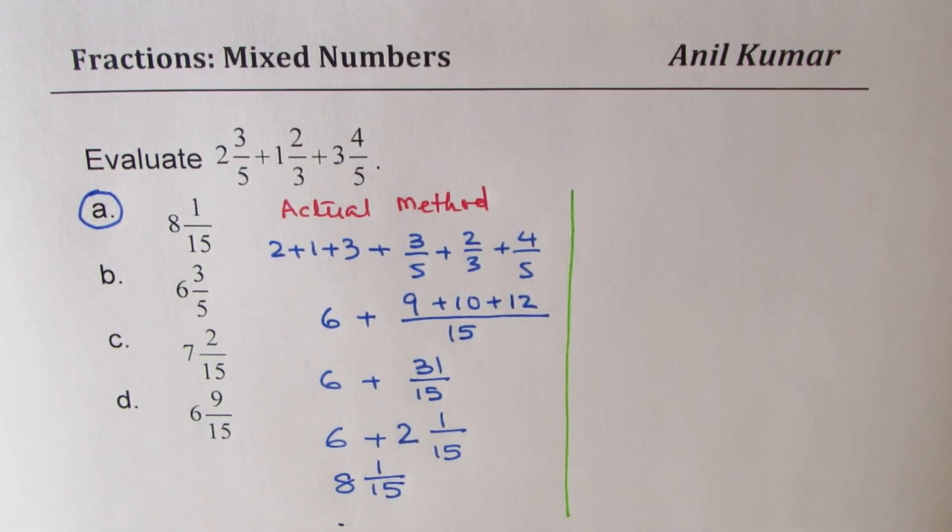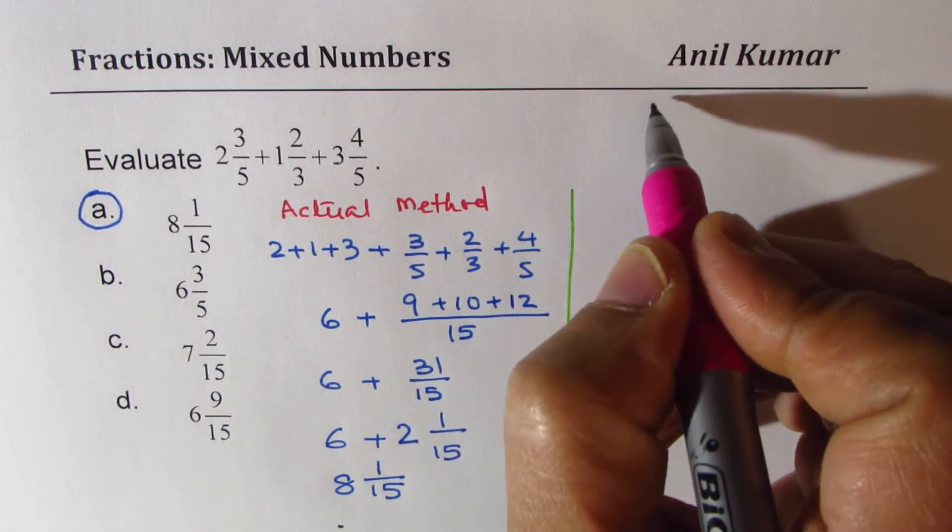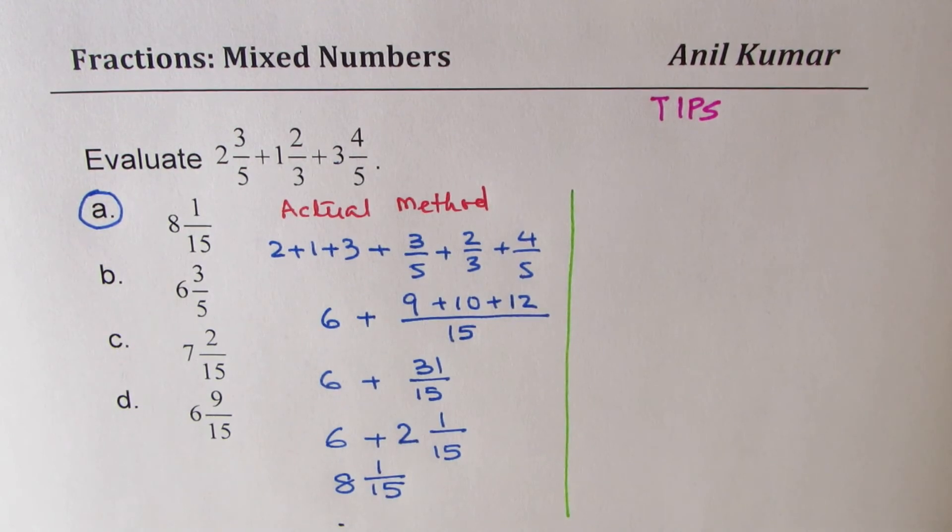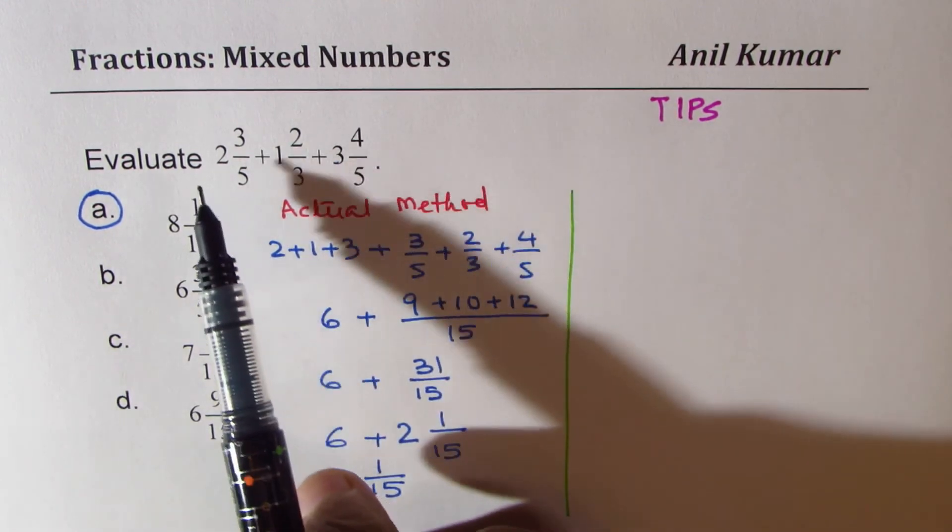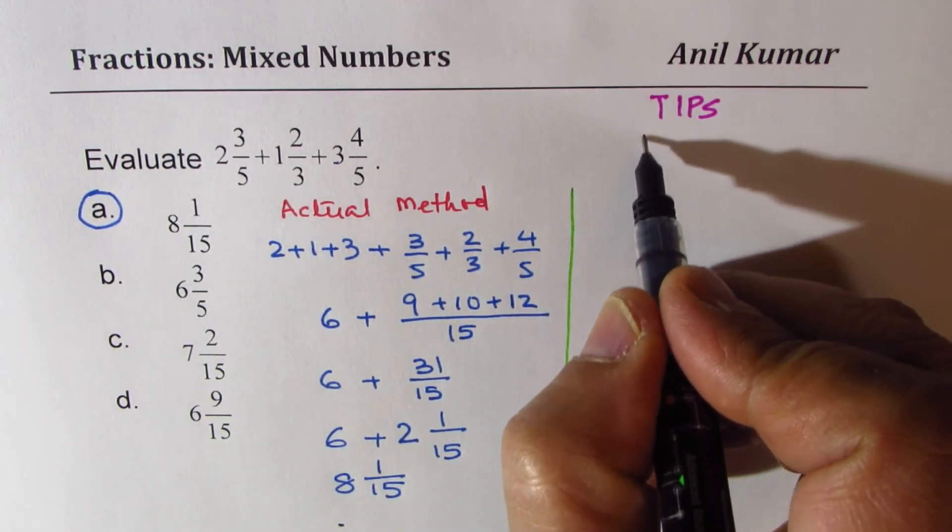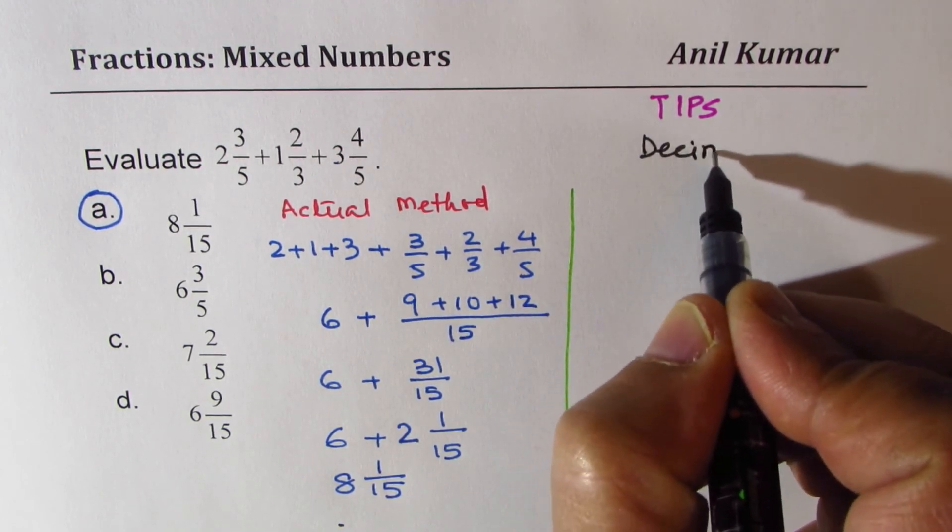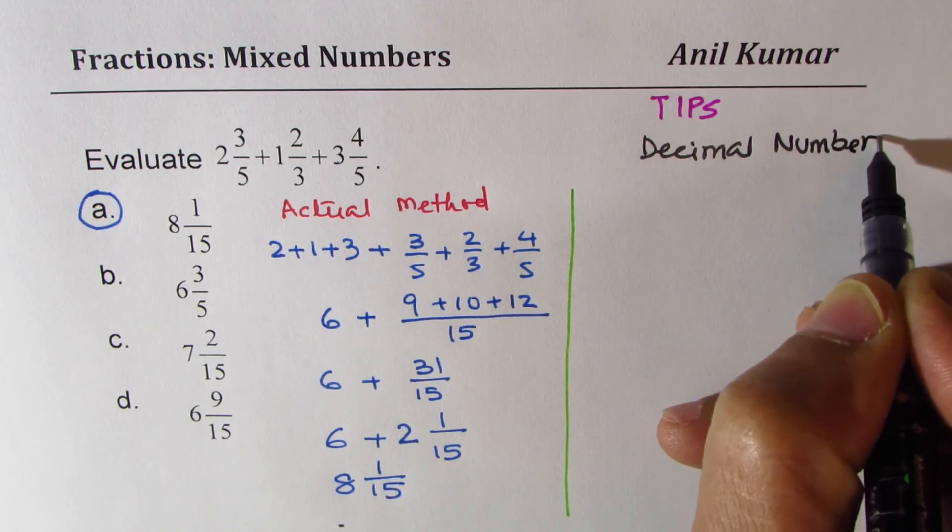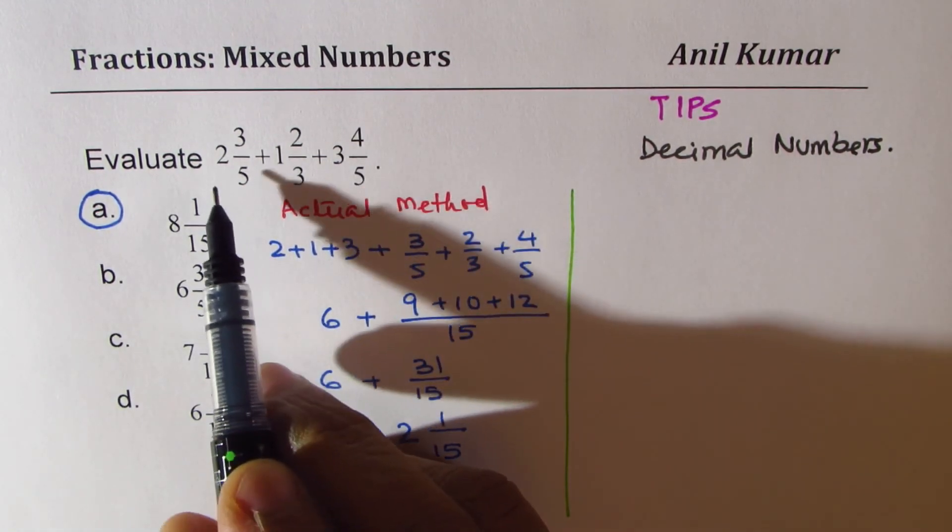Now let's talk about tricks and tips. The other method is tips which you might use if time is a constraint. The tip here is just to write decimal equivalent. We should think about decimal numbers.